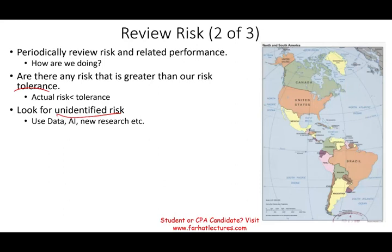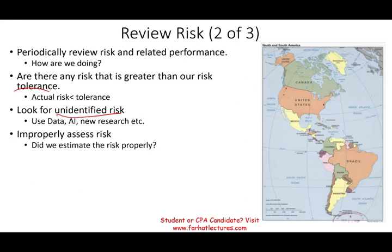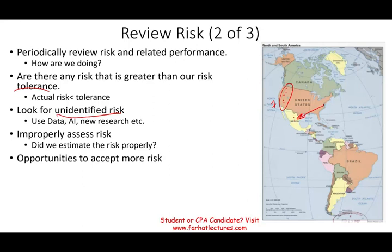When you review risk, you want to see if you're improperly assessing risk. Did we estimate the risk properly? For example, let's assume we're an airline company — every year we have three trips to the West Coast on a daily basis, then we increase to five trips. We were handling five very well, so maybe we should increase to seven trips per day, because we were not properly estimating our risk. There are also opportunities to accept more risk — maybe starting two flights to Mexico City. Are we taking sufficient risk in our company? You want to constantly review this.